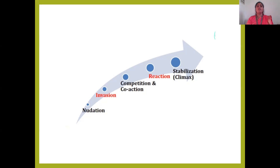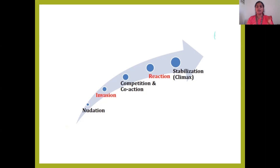In this competition, which one survives — whether A survives or B survives — is what is called reaction. After reaction, the one who finally makes their establishment and overtakes the other group is stable, and they form the final step which we call stabilization or the climax community. If during competition A and B are present and as a part of reaction A is surviving and B is destroyed, then the climax community is group A.